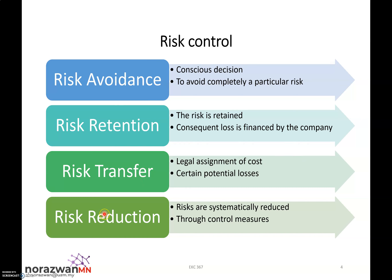The fourth part of risk control is what we call risk reduction, where the risks are systematically reduced through control measures. This is the active part of how we can make a risk control. So through the combination of risk avoidance, risk retention, risk transfer, and also risk reduction, we can achieve risk control and also risk assessment as part of process safety management.